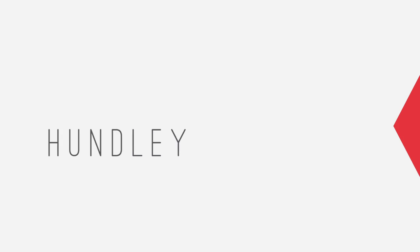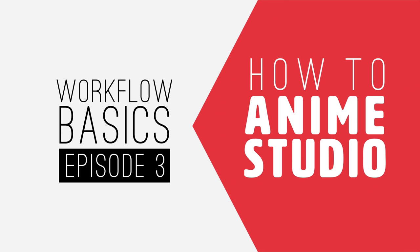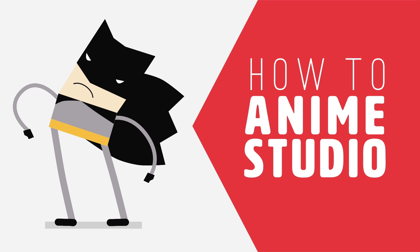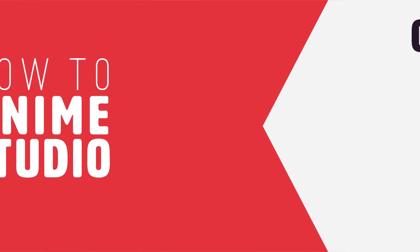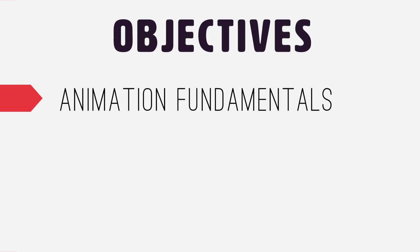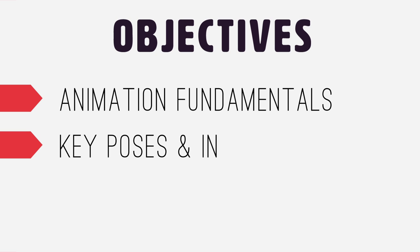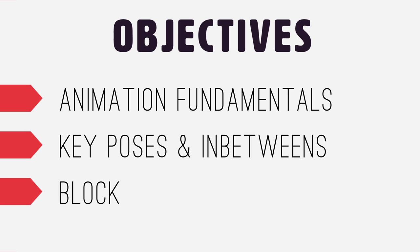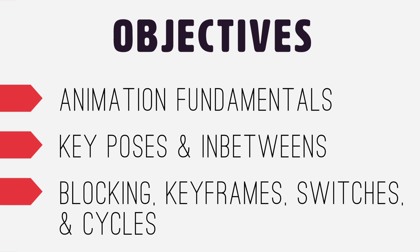Hey, I'm Jared and you're watching How to Anime Studio. This is episode three of workflow basics. We're going to animate Batman - we've already designed and rigged him, now let's get him moving. We're going to learn animation fundamentals - a short, basic version - including key poses, in-betweens, blocking, keyframes, switches, and cycles. This is just a brief overview of what you need to get started.